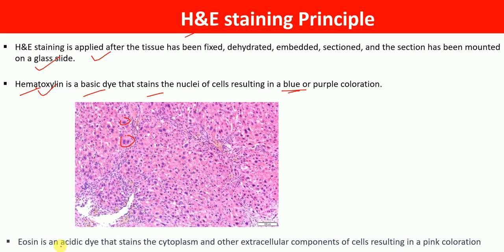Eosin is an acidic dye that stains the cytoplasm and other extracellular components of the cells, resulting in pink coloration. The pink coloration you see here represents the eosin stain, indicating the cytoplasm or extra-nuclear components. With H&E staining, we can nicely visualize the cellular structures present in the tissue section.